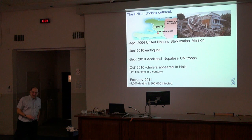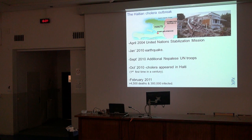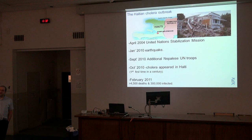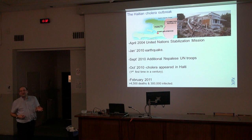Coming to Haiti: Haiti has been an unstable, very poor country for a long time, and there's been a UN presence since 2004. In 2010, there was an incredibly severe earthquake causing very large numbers of deaths. In response, the UN sent additional troops from Nepal to Haiti in September. In October, cholera appeared in Haiti — there had been no cholera there for 100 years. By February 2011, there had been more than 4,500 deaths and 300,000 people affected, and that number has continued to rise.